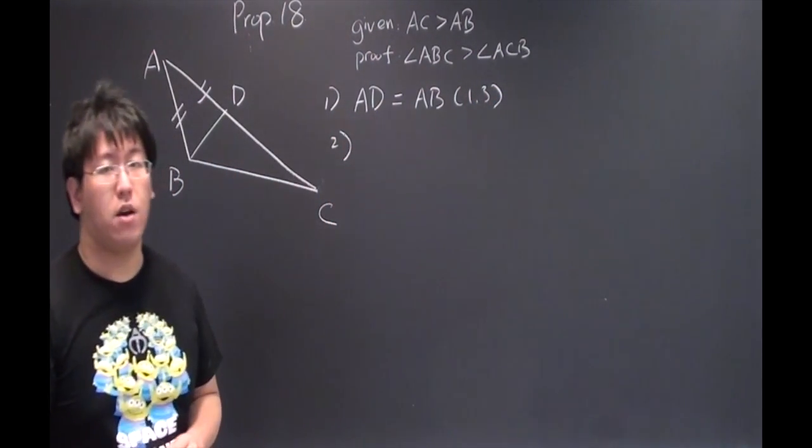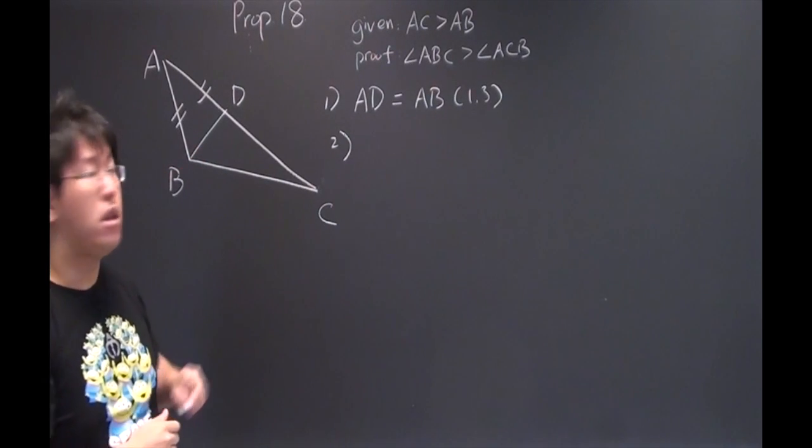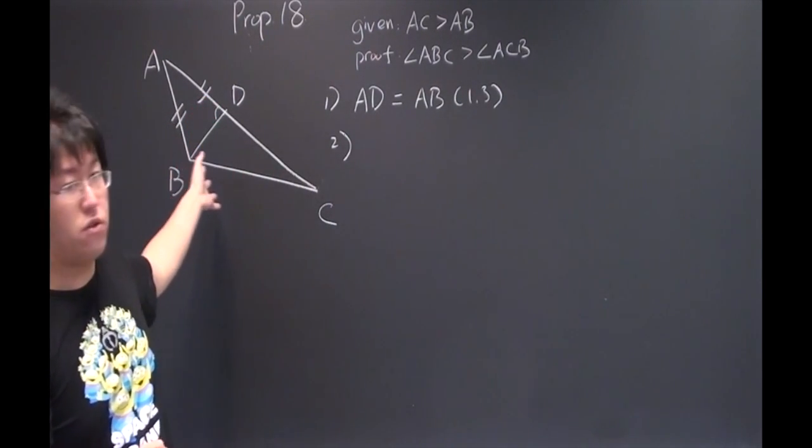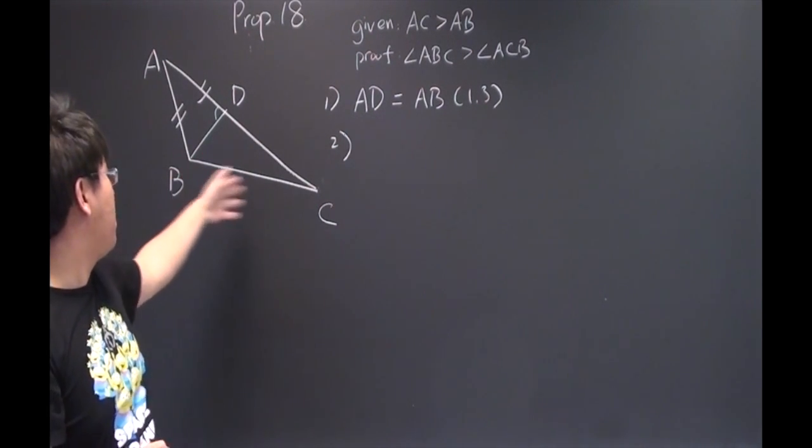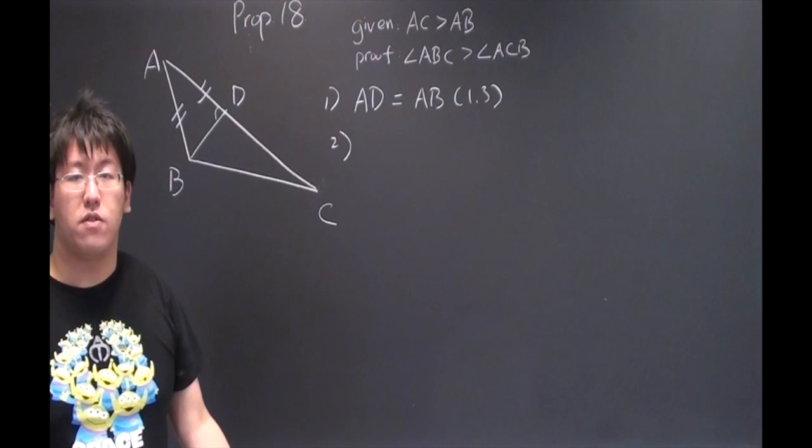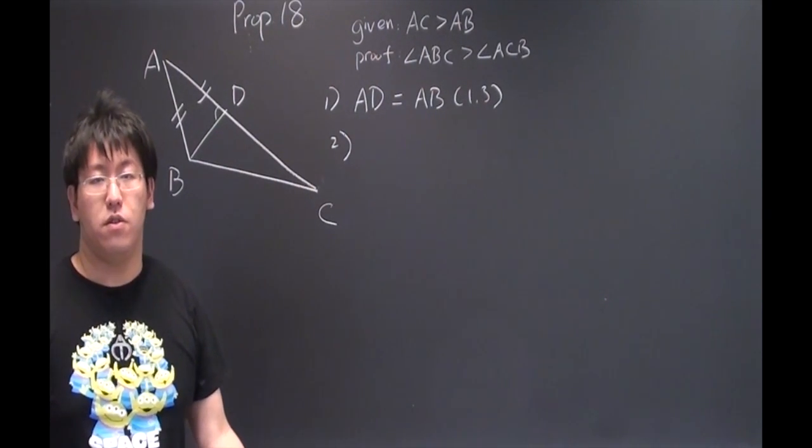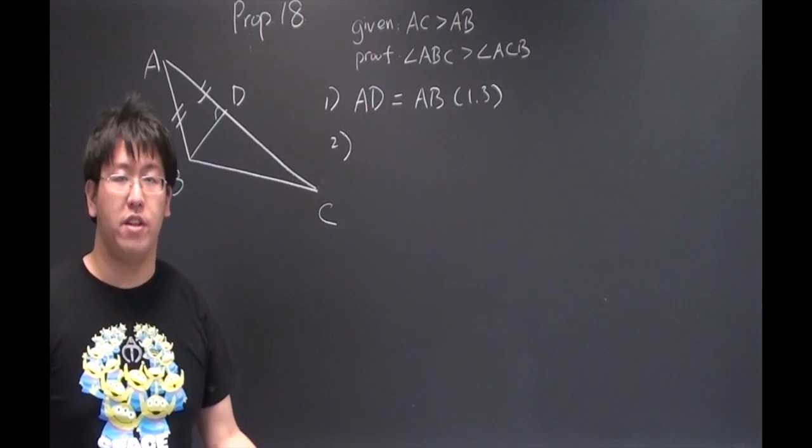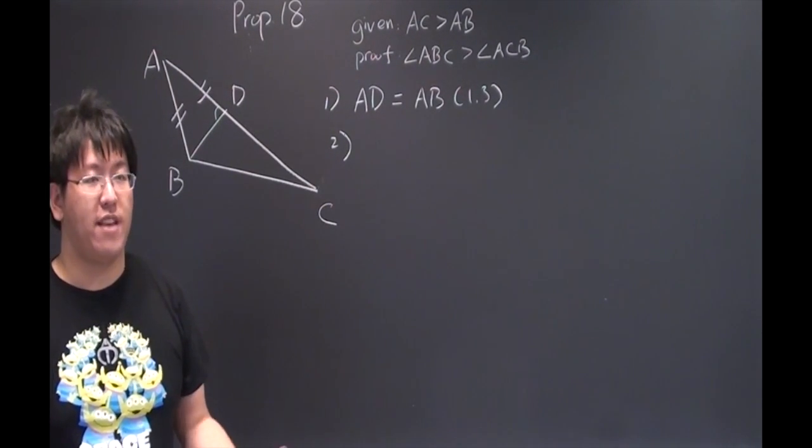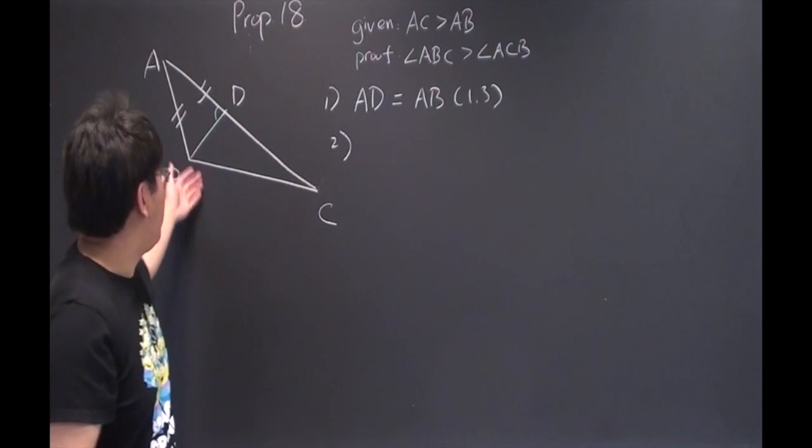Okay, now see the angle ADB. This is an exterior angle to triangle DBC. And by Prop I.16, we know that in any triangle, the exterior angle is greater than the interior opposite angle. And now our opposite angle is angle ACB.